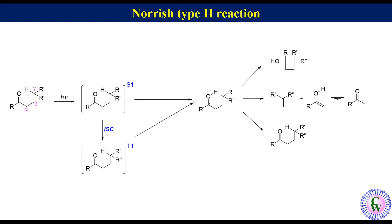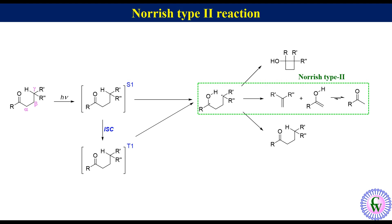The second photo-elimination process has been known for a long time as the Norrish Type 2 reaction. Now we will discuss these three processes with examples one by one.